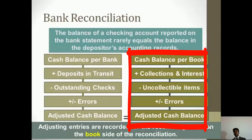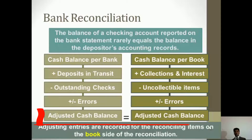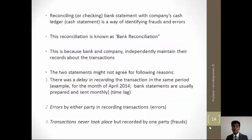When those are recorded, we arrive at an adjusted cash balance. Therefore, the adjusted cash balance per bank and the adjusted cash balance per the company should ultimately be equal. That is called bank reconciliation — reconciling to the bank.